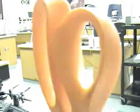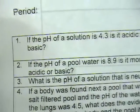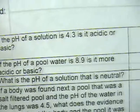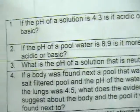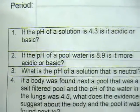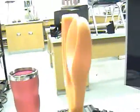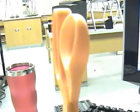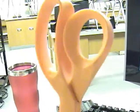Now it's time for the second one. Number two: if the pH of pool water was 8.9, is the water more acidic or basic? I think we just covered that one. It's definitely going to be basic because it's above 7.